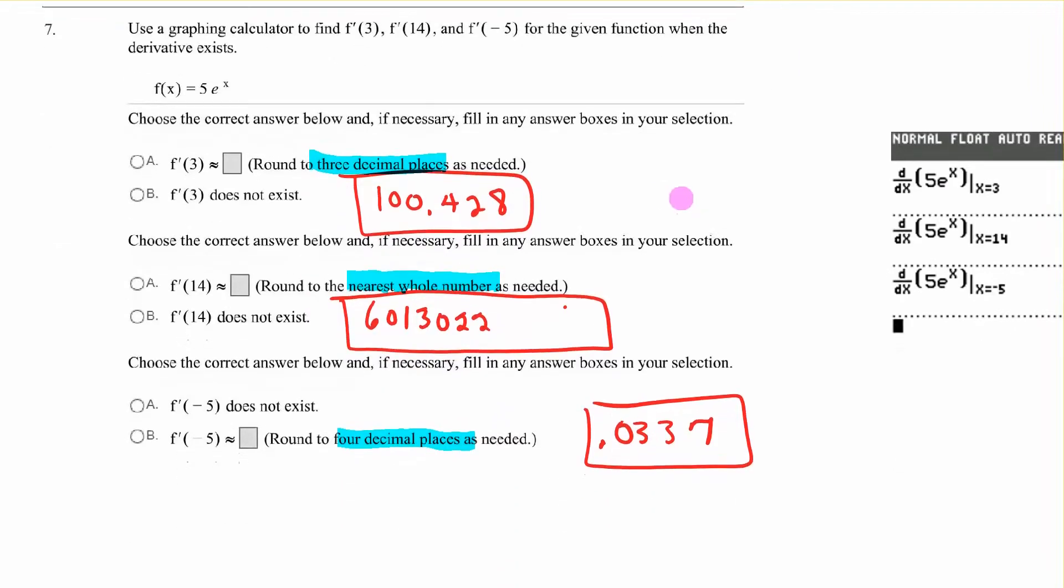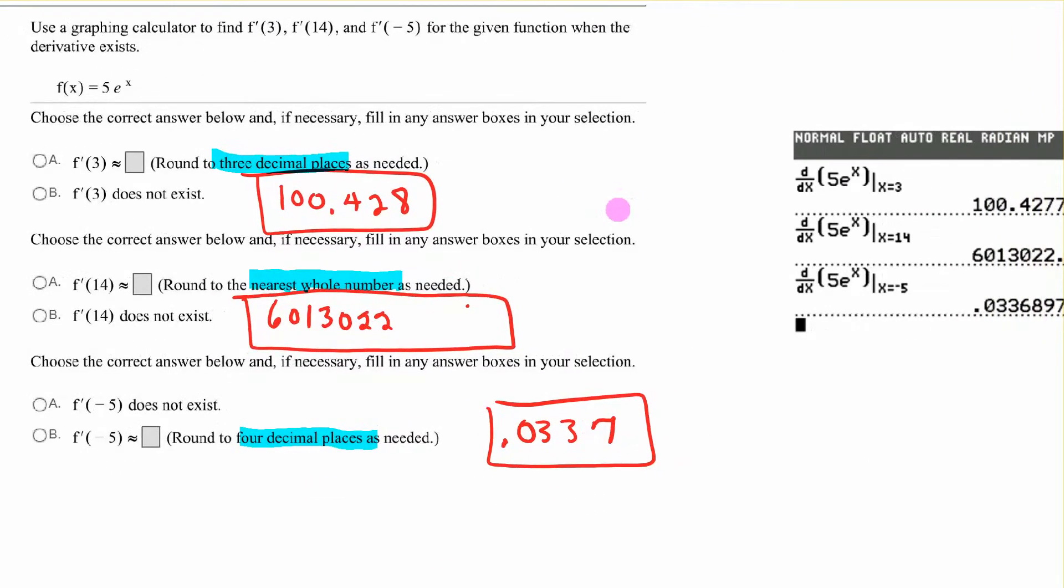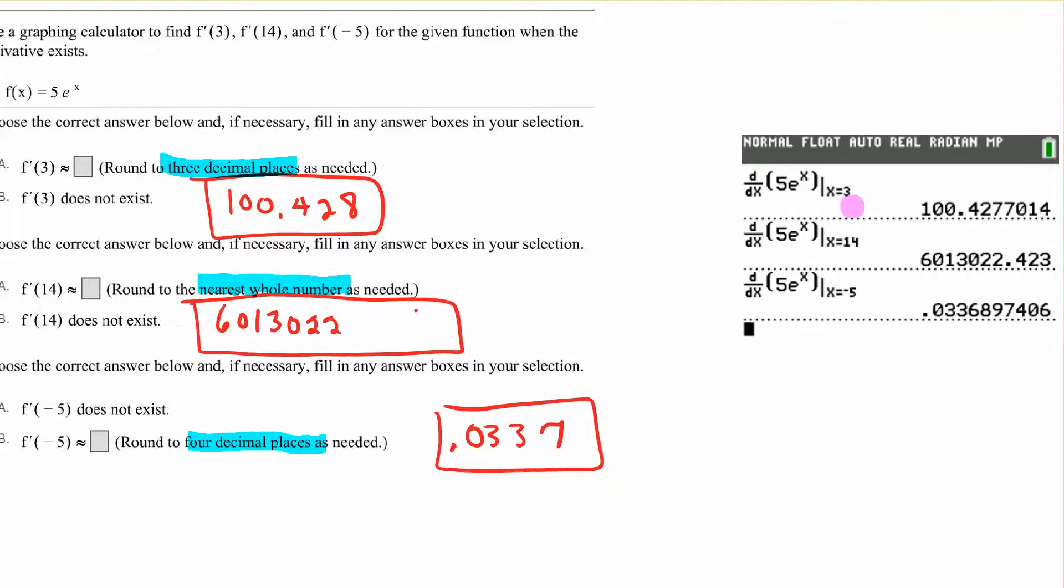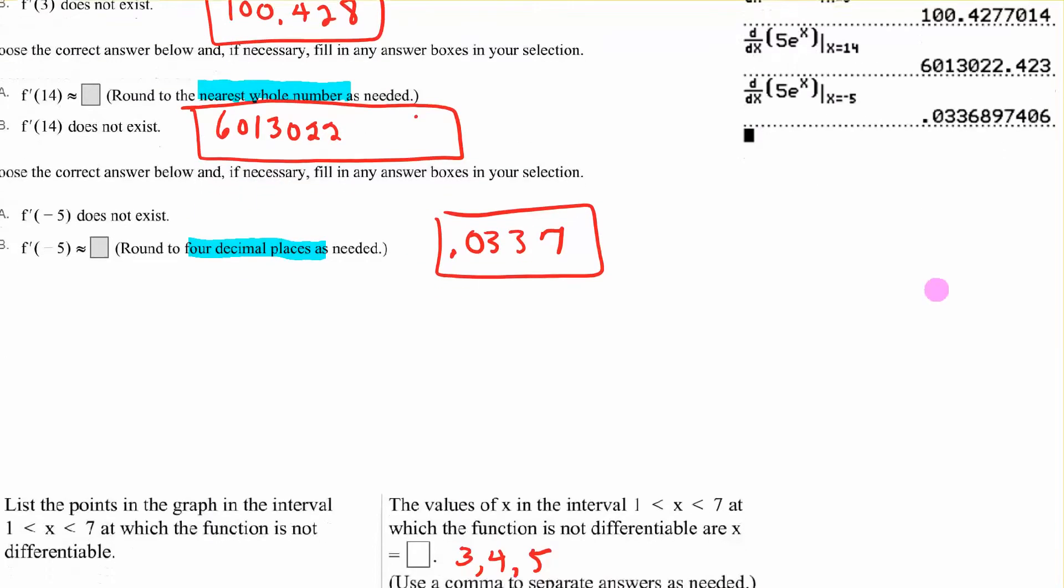Same thing on this one. You have 5e^x. On math 8, you can do that for x = 3, 14, and -5. It does say round to 4 places on this one, whole number here, 3 decimal places. Be sure you read those directions. That will help you make sure you get it right the first time.